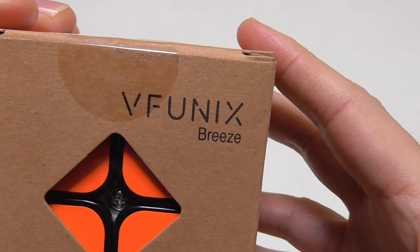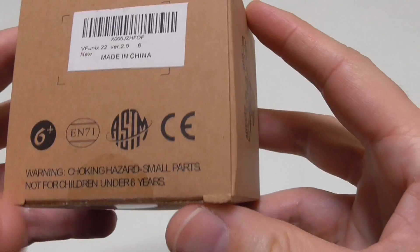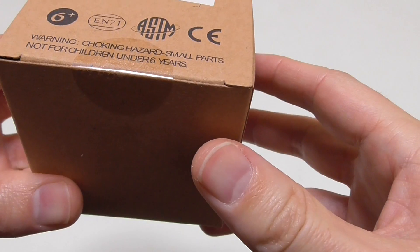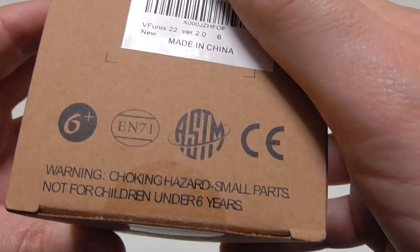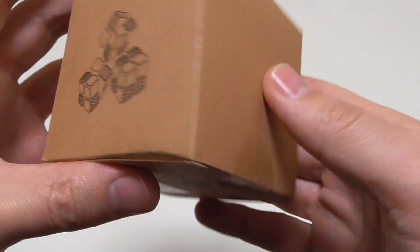V-Phoenix, made by Breeze, made in China, not for children under 6 years old because it is a choking hazard.